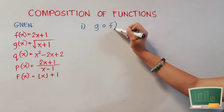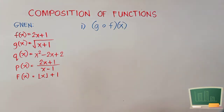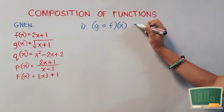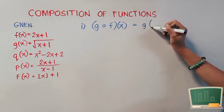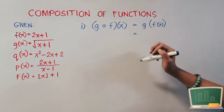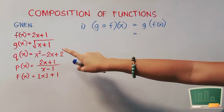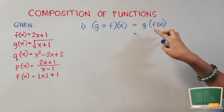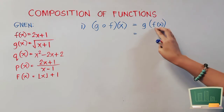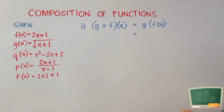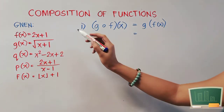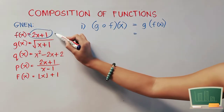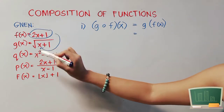Let's start with number 1. Our little circle here is the symbol for composition of functions, and we can write this as g of f of x. It means we will be using the function g, but our x here will be replaced by the entire function f. To visualize that, this function here will be our value of x.